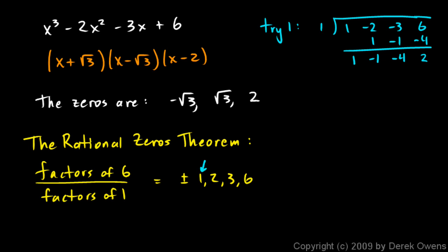Our next one to try is 2. So let's try 2: 1, -2, -3, 6. We draw a line, bring down the 1. 1 times 2 is 2, that gives us 0. 0 times 2 is 0, and then we add here and we get -3. -3 times 2 is -6, and we add there and we get 0. So that worked! That means that x - 2 is a factor.